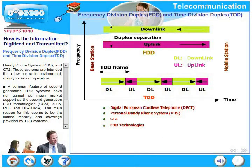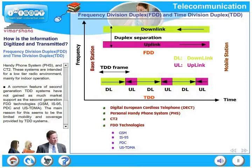For example, FDD is being used widely in GSM, CDMA-IS95, PDC, US TDMA, and so on. The main reason for this seems to be the limited mobility and coverage provided by TDD systems. That appears to be the limitation at this point of time.